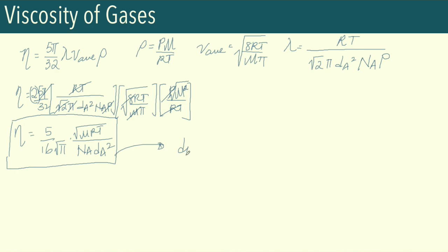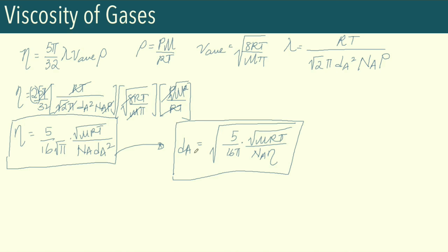Why is it important to solve for molecular diameter? Because the only experimental parameter needed is the viscosity coefficient. We can make measurements on our gas at certain pressure and temperature conditions, measure its viscosity, and calculate the viscosity coefficient. Then we apply this equation to solve for molecular diameter, which is a very hard parameter to measure directly.